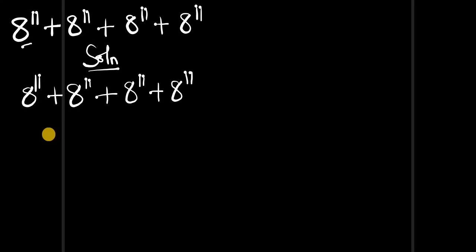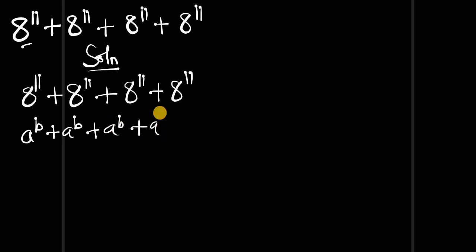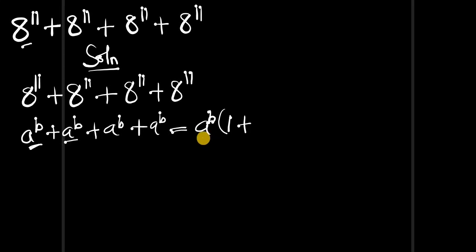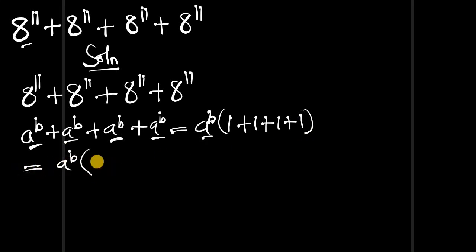Now, let's consider this identity: if you have a to the power of b, plus a to the power of b, plus a to the power of b, plus a to the power of b, you can bring out one of these a to the power of b. Then dividing each term by a to the power of b gives 1 plus 1 plus 1 plus 1, which equals 4. So the result is a to the power of b times 4.